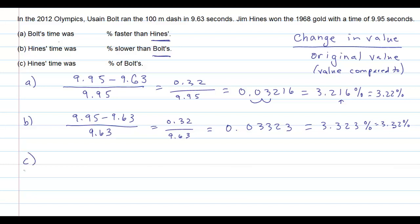Finally, Part C, Hines' time was what percent of Bolt's? Again, the first thing I'm going to do is the denominator. I'm talking about comparing it to Bolt's time, so I know my 9.63 has to go in the denominator. In this case, instead of looking at the difference between the times, what I'm going to do is put simply Hines' time. And when I do that, I get this as an answer for the percent of Hines' time to Bolt's time. Now this is in decimal form, so I'll move the decimal place over twice to the right to get a percent, and then finally round to two decimal places. And there we have it.